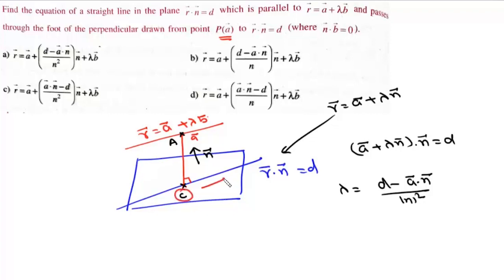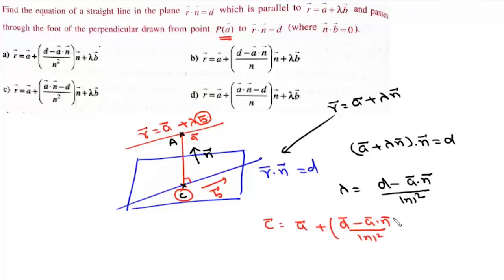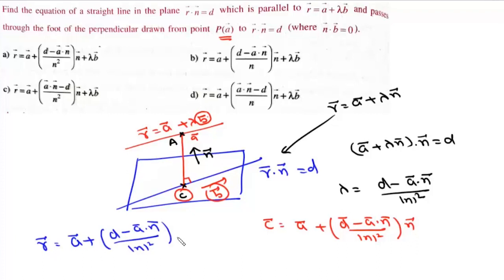For the required line, we have point C which is a + λn = a + [(d − a·n)/|n|²]n, and the direction is b since the line is parallel to the given line. So the equation of the line is r = a + [(d − a·n)/|n|²]n + λb, which is option A.